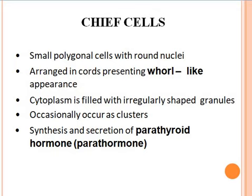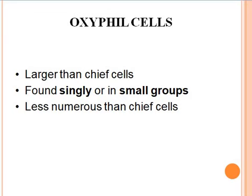Oxyphil cells are larger in size as compared to the chief cells. These cells are found singly or in small groups, and they are less numerous as compared to the chief cells.